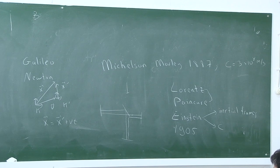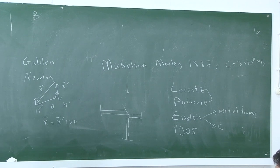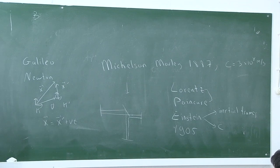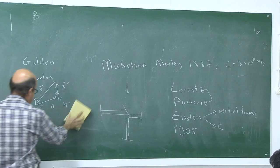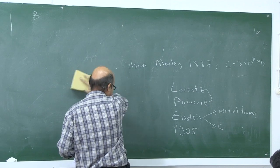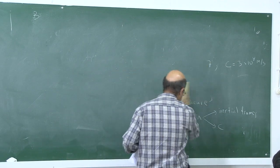The point we will arrive at is that Maxwell's equations are covariant in form — they don't change in form in inertial frames. I'll try to derive the Lorentz transformations as quickly and as simply as possible.